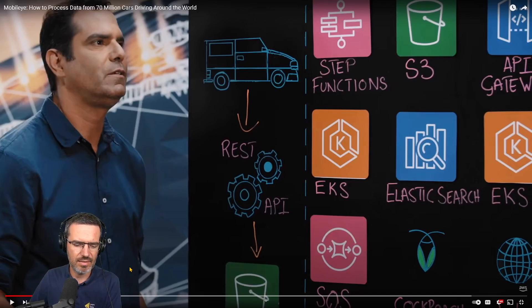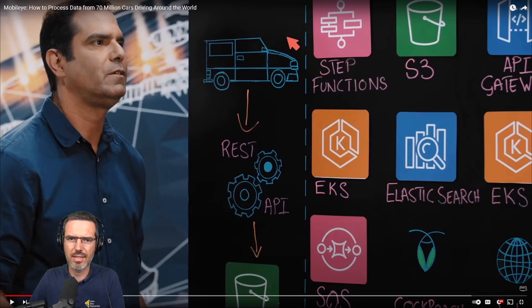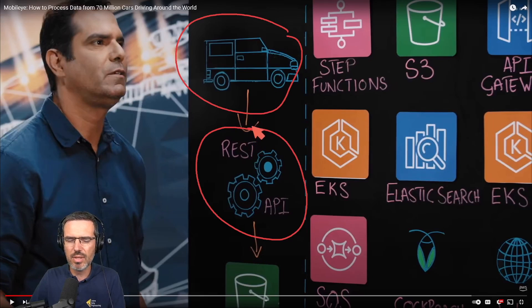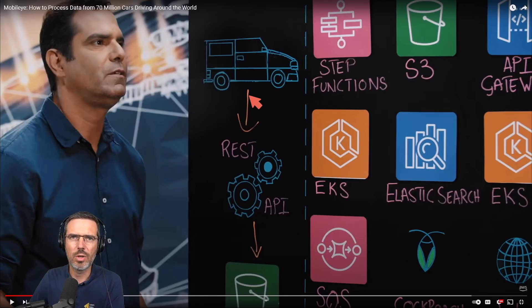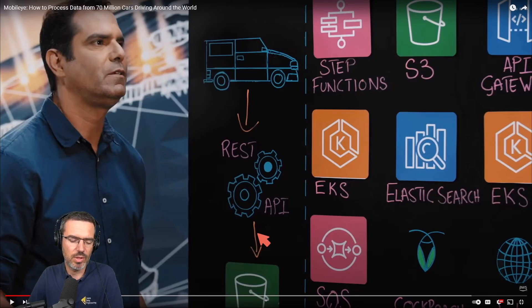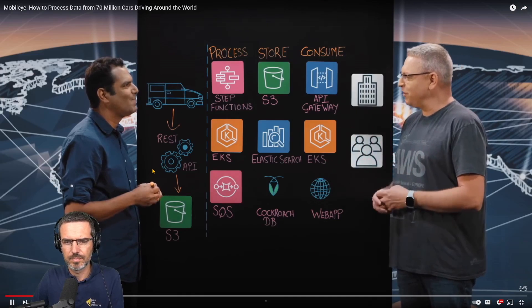This is very typical — a lot of people do this. They have their device, which is essentially an IoT device, then a REST API, and a folder where the data gets dropped. This also tells us what they're sending — either images, larger files, or large JSONs that get transformed into files via the REST API. Cars are driving around the world collecting data and storing it into an S3 bucket.